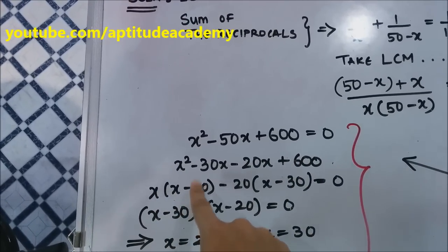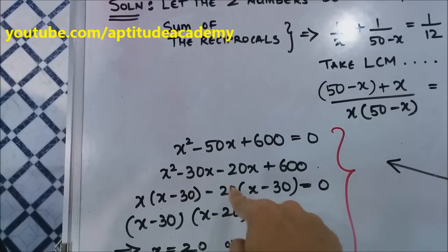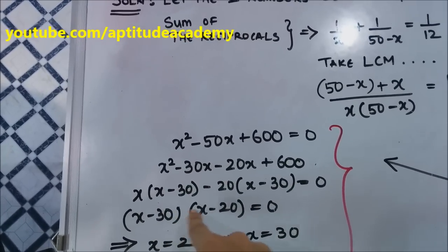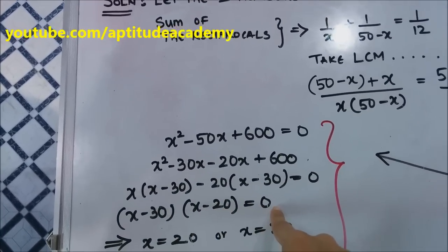x times (x - 30), I have taken x common here. -20, I have taken common here, times (x - 30). So now you get two factors: (x - 30)(x - 20) = 0.